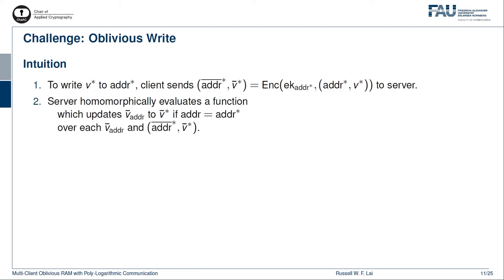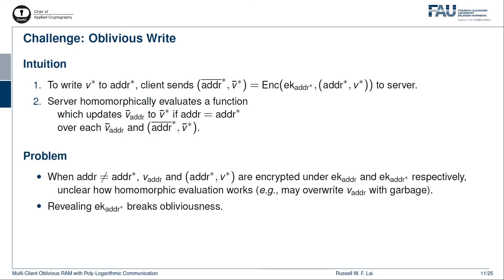Next, we tackle the challenging part, which is oblivious write. To override the target address, address*, with a new value v*, the client encrypts the target address and the new value to the server. The server then evaluates a certain function over each database entry. Intuitively, this function should update the existing value v_address to the new value v*, if the address is equal to the target address; otherwise, the existing value v_address should remain unchanged. The difficulty is that when the address is not equal to the target address, the existing value v_address stored in the database and the tuple (address*, v*) sent by the client are encrypted under different keys. Therefore, it is unclear how homomorphic evaluation works. Obviously, revealing the correct encryption key to the server is not an option because it breaks obliviousness.